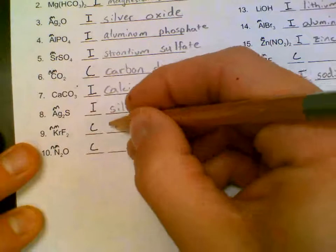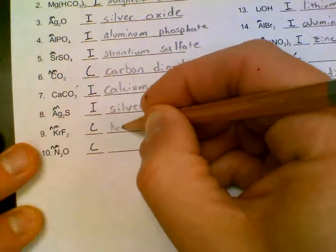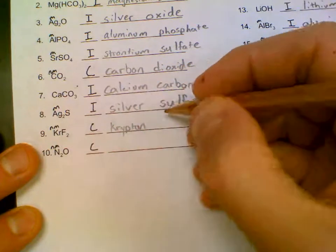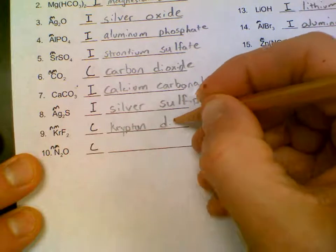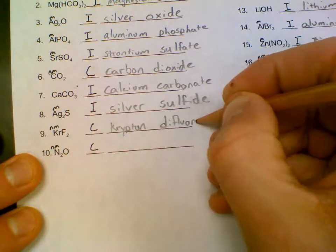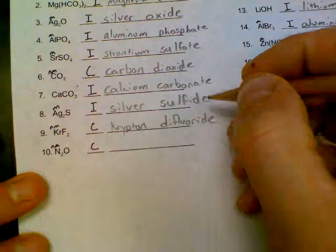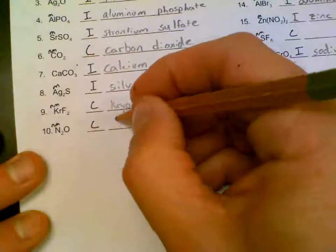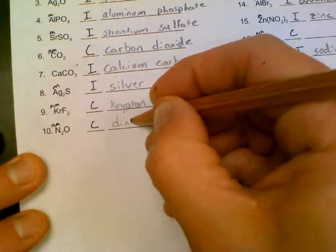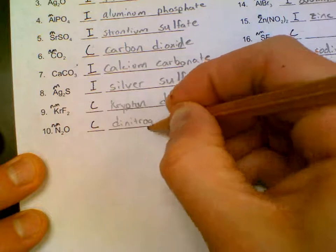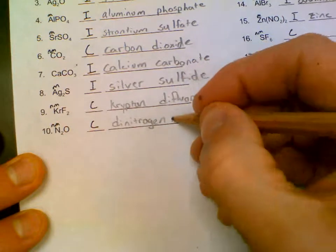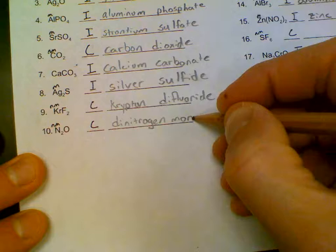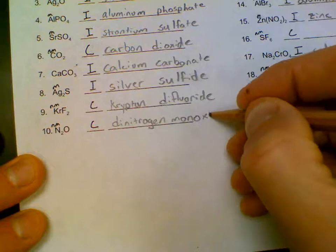Kr, krypton, no prefix, difluoride. Here we have a prefix, dinitrogen, and then we're going to use the prefix mono, but we're going to cut off the double O to make it monoxide.